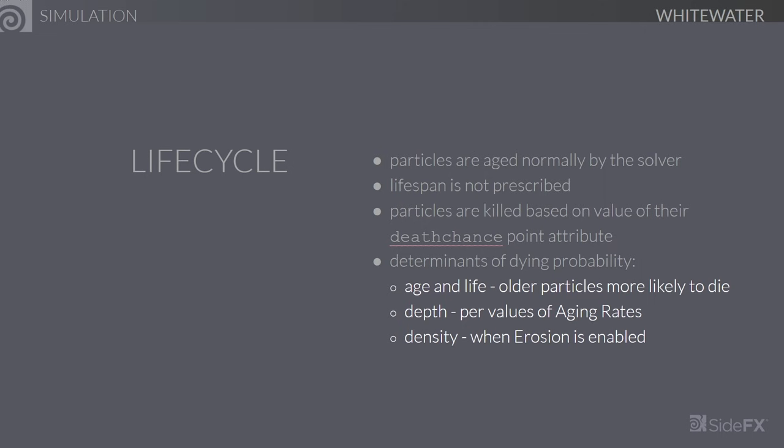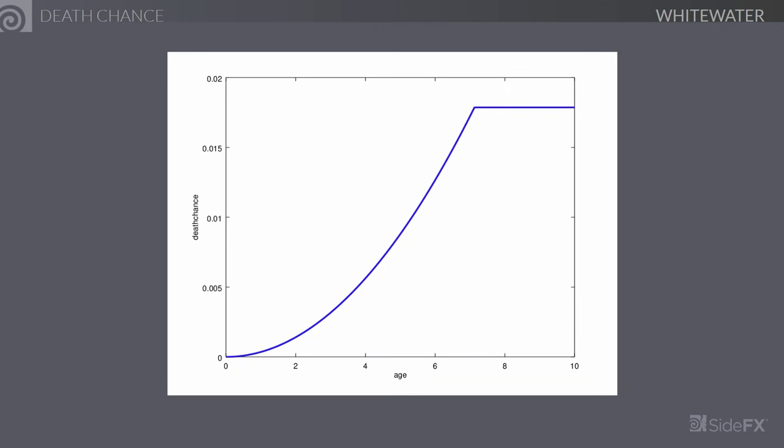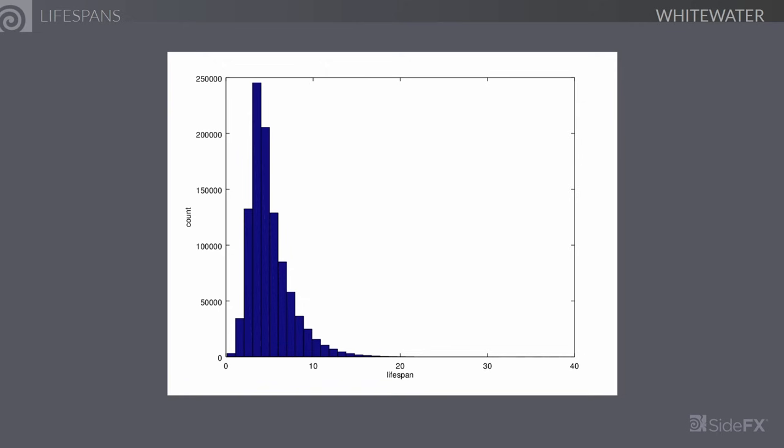This is a plot of probability of a particle being eliminated from the simulation against age, with an expected lifetime of 5 seconds. We can see that it starts off very low, then ramps up and eventually tapers off into a constant. The distribution of lifespans for such a stochastic process shows that if you were to compute the mean of this distribution, it's still 5 seconds as expected. But we see that a lot of the particles greatly outlive their expected lifespan — as long as 40 seconds in this particular scenario.